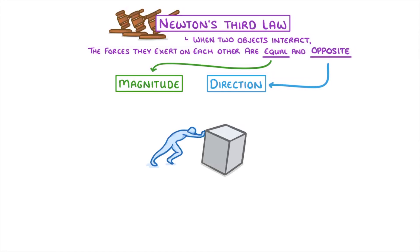So if you were to push a box using a force of 100 newtons, then the box would also exert an equal force of 100 newtons on you. But the two forces would be acting in opposite directions. And we call this force that the box is exerting the normal contact force.